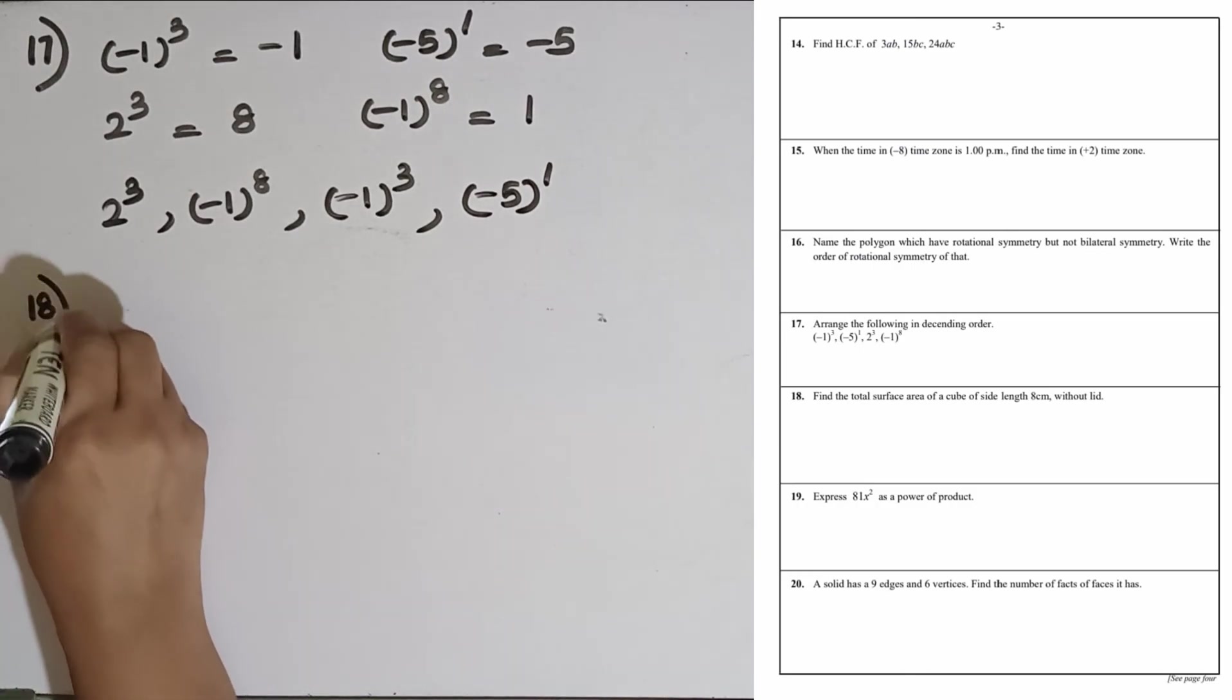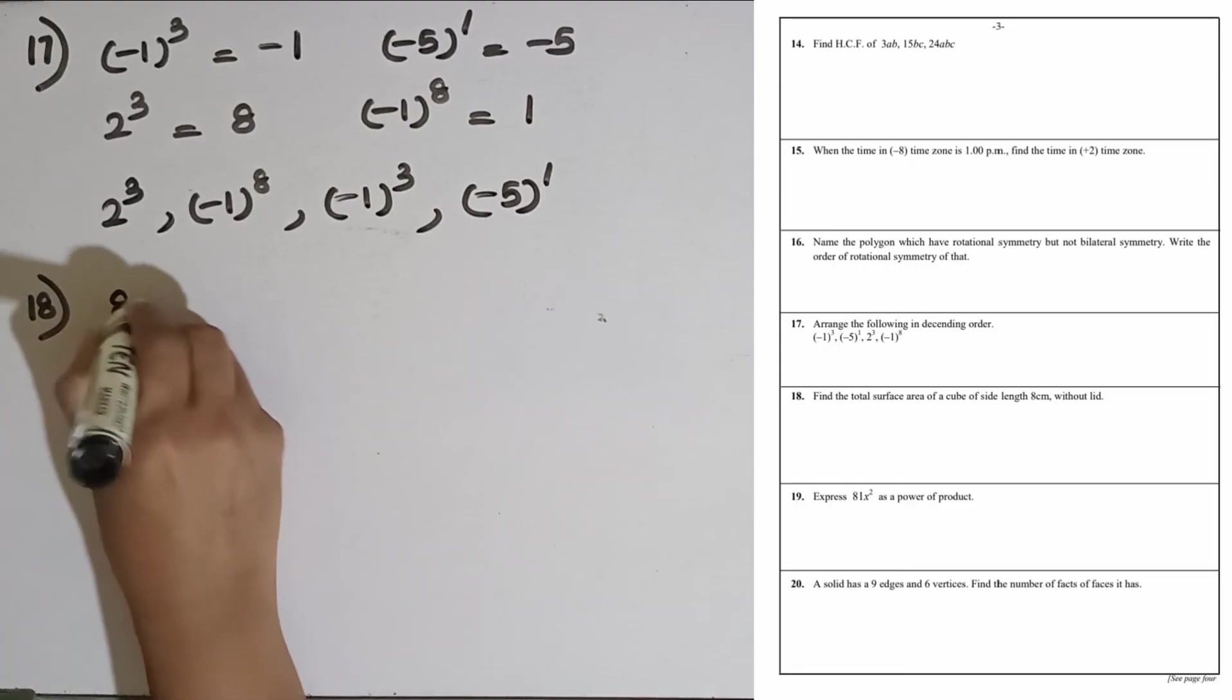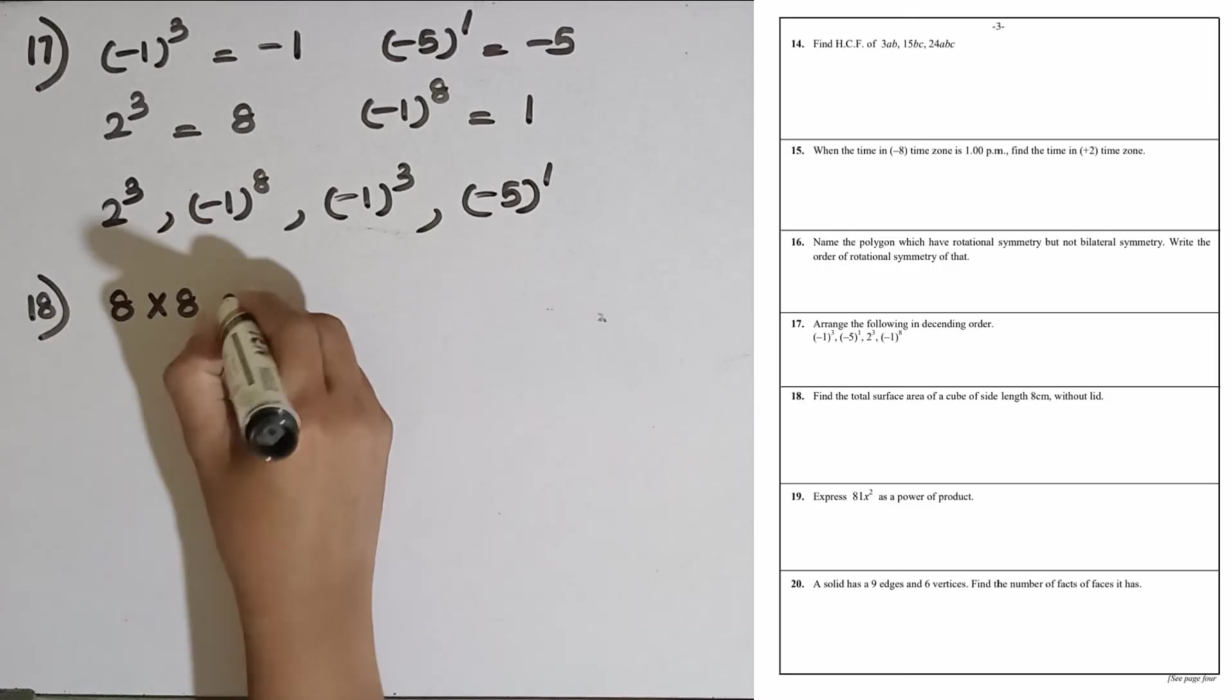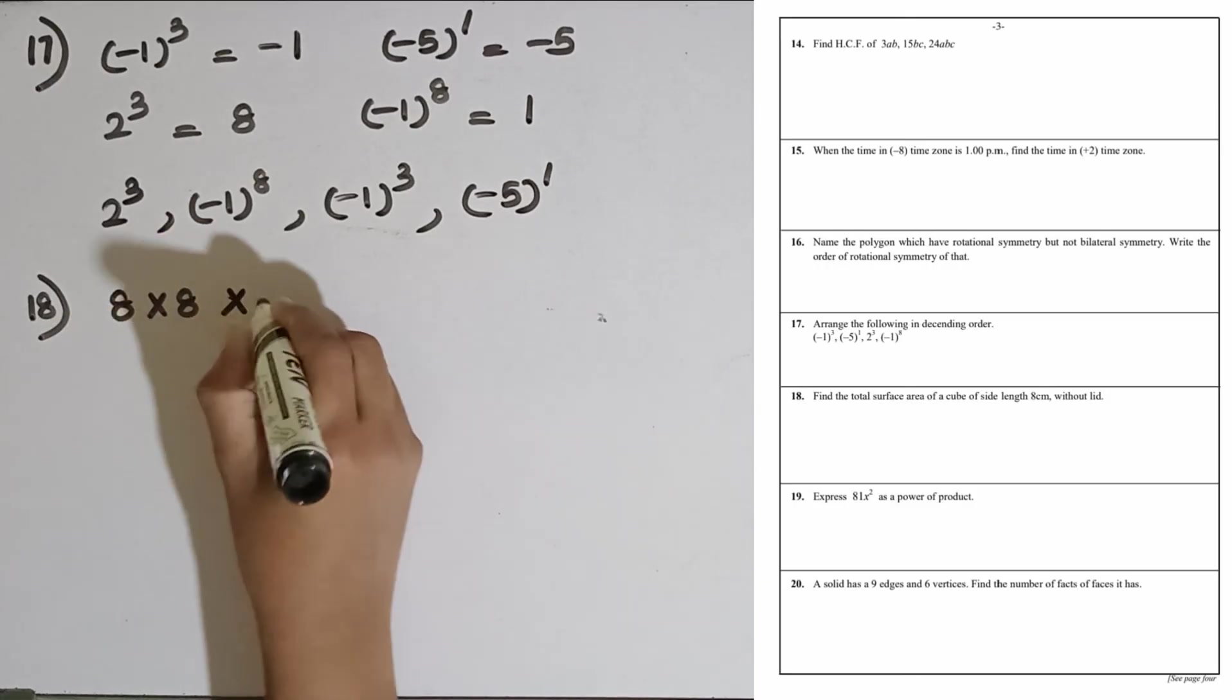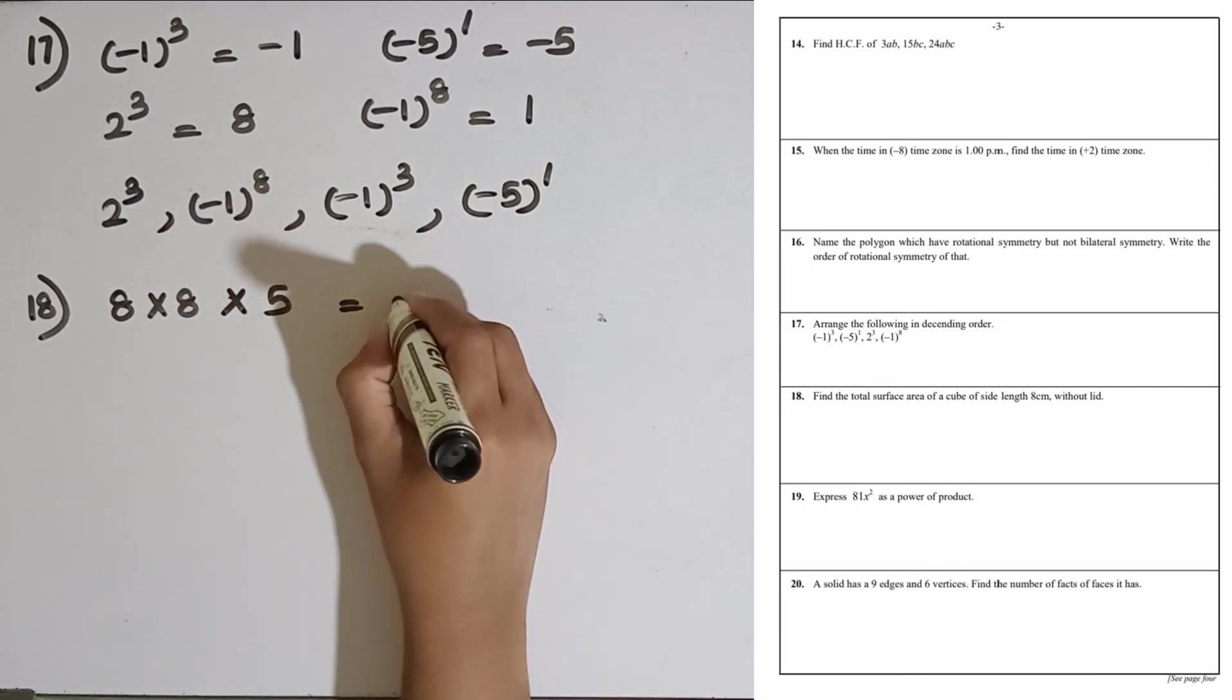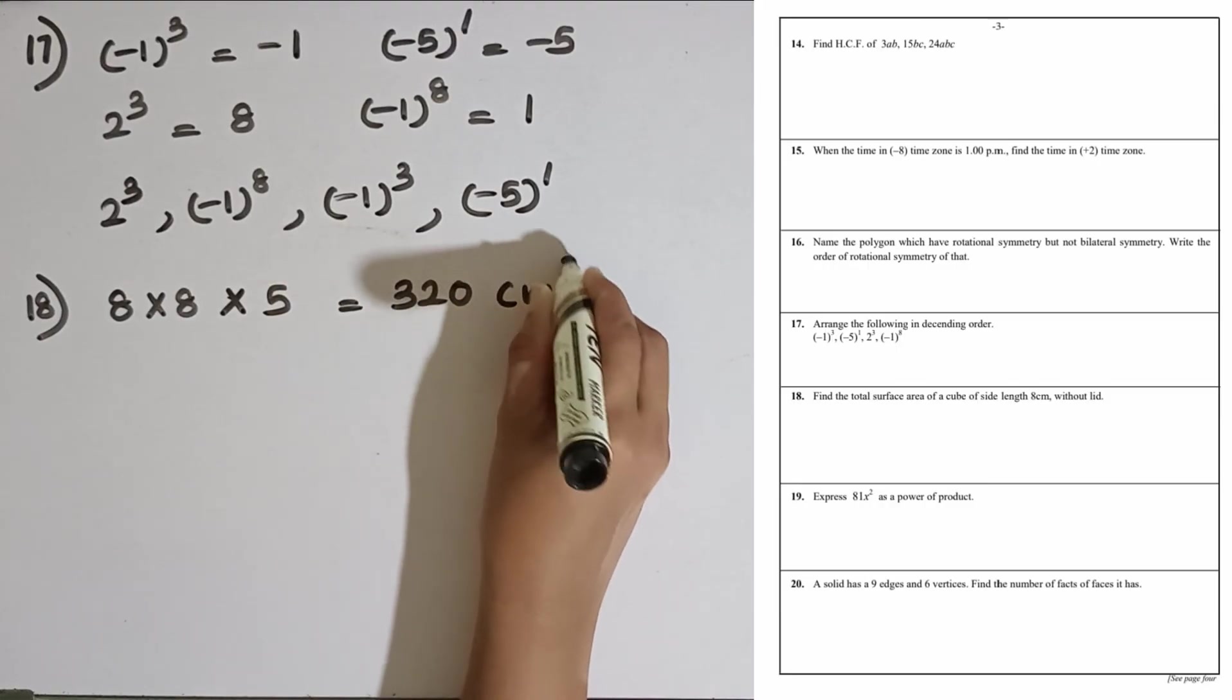Question number 18: Find the total surface area of a cube of side length 8 cm without lid. If you take the area of one side, 8 multiplied by 8, this is the area of one side of the cube. Then they are given without lid, so we have to take the area of 5 sides. This is equal to 320 square centimeters.